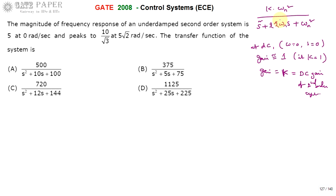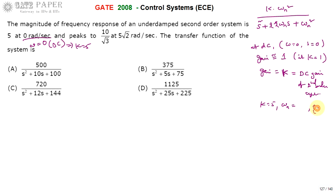The magnitude of frequency response of the second order system is 5 at 0 radians per second, which is omega equal to 0, the DC value. The magnitude of the second order system at omega equal to 0 is 5, so this gives us k equal to 5. We have calculated the first parameter: k equals 5.